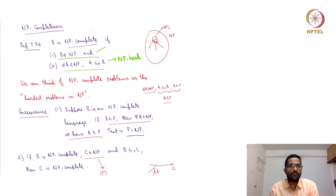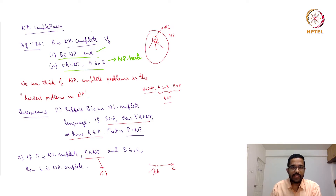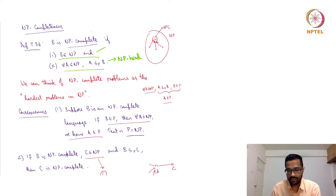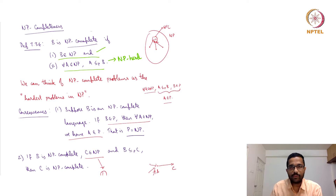When somebody says a language is NP-hard, that means that language just satisfies condition 2: all NP languages reduce to it. It need not satisfy condition 1. Whereas NP-complete means the language has to be both NP-hard and in NP.